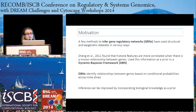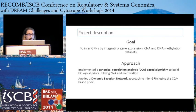DBNs identify relationships between genes based on conditional probabilities across time slices, which always employs a time series data component. The inference can be improved by incorporating biological knowledge as a prior. The goal was to infer gene regulatory networks by integrating gene expression, copy number alterations, and DNA methylation data sets. We implemented the canonical correlation-based algorithm to build biological priors using copy number and DNA methylation, and then used that as a prior in the dynamic Bayesian network approach to infer GRNs using the CCA-based priors.